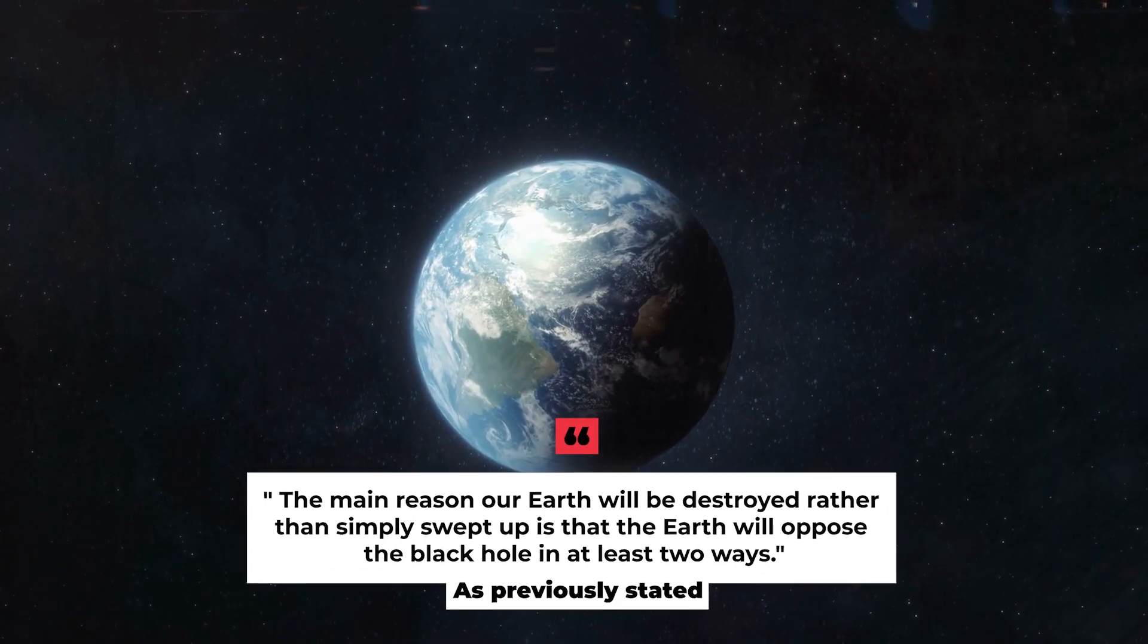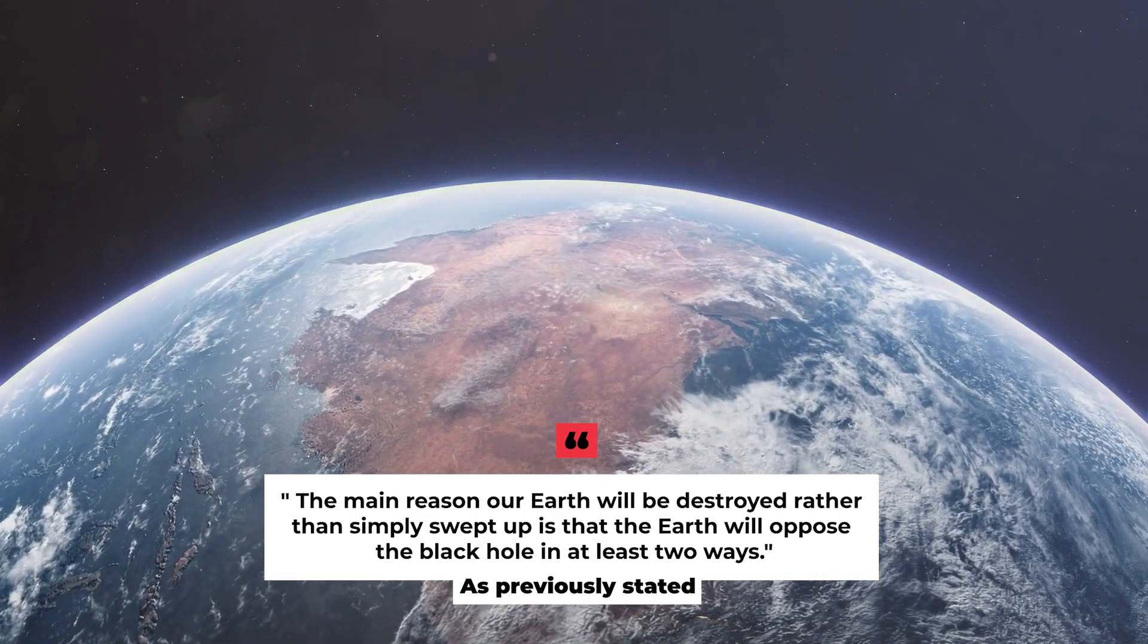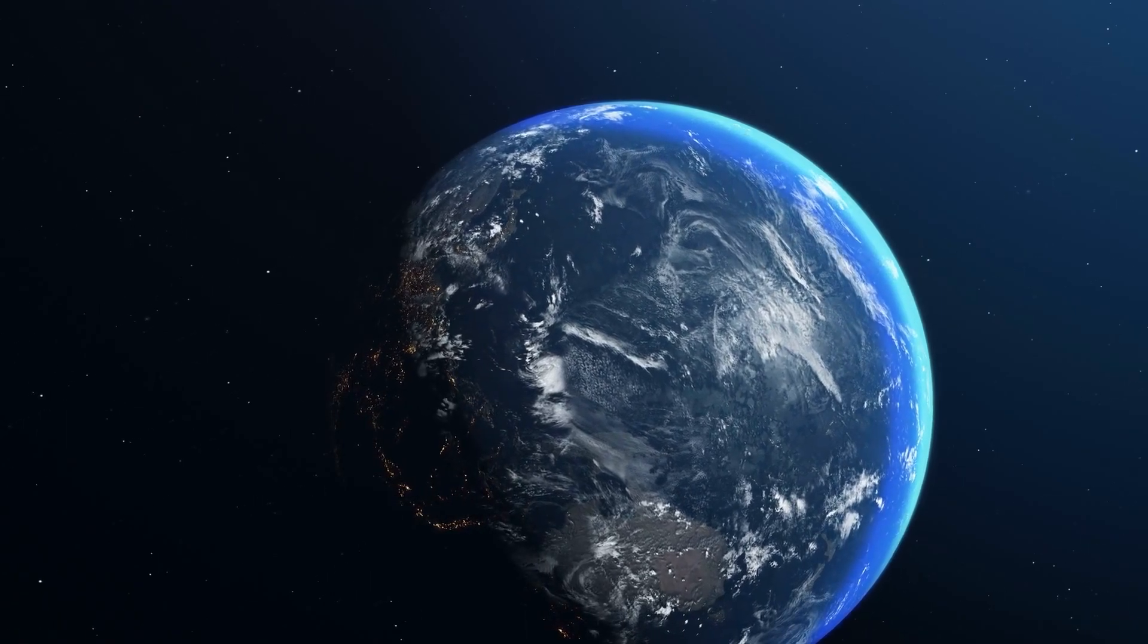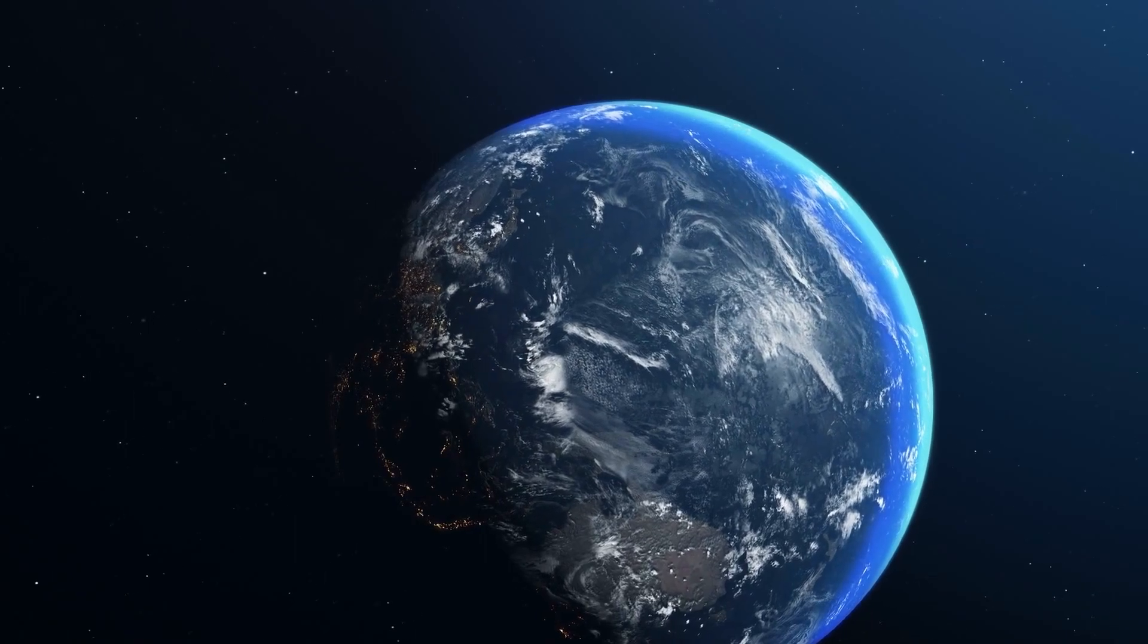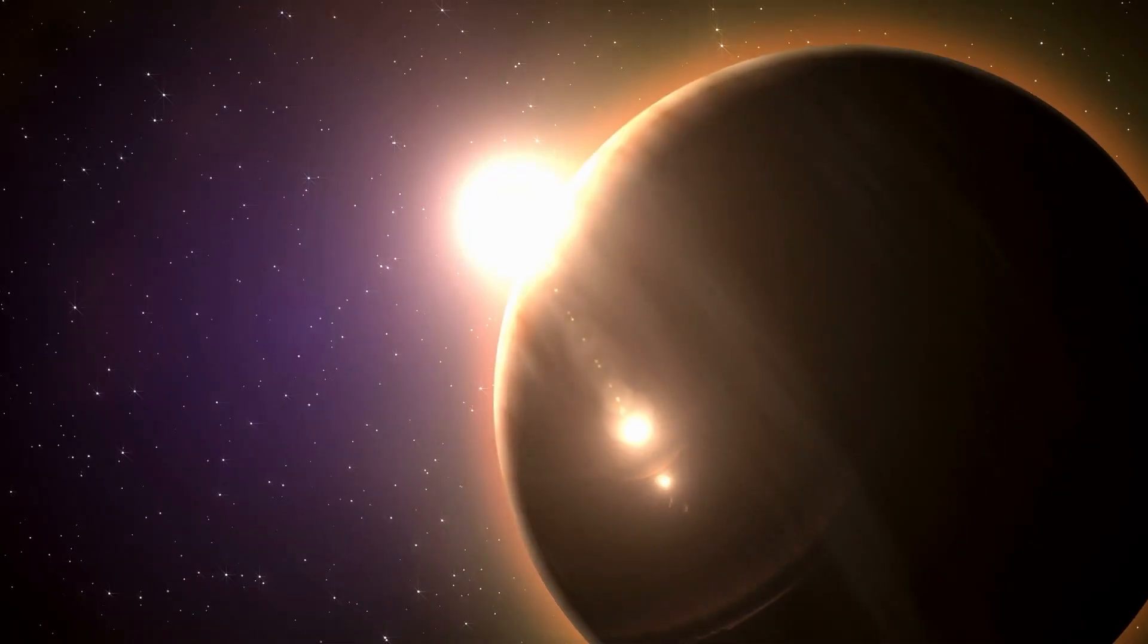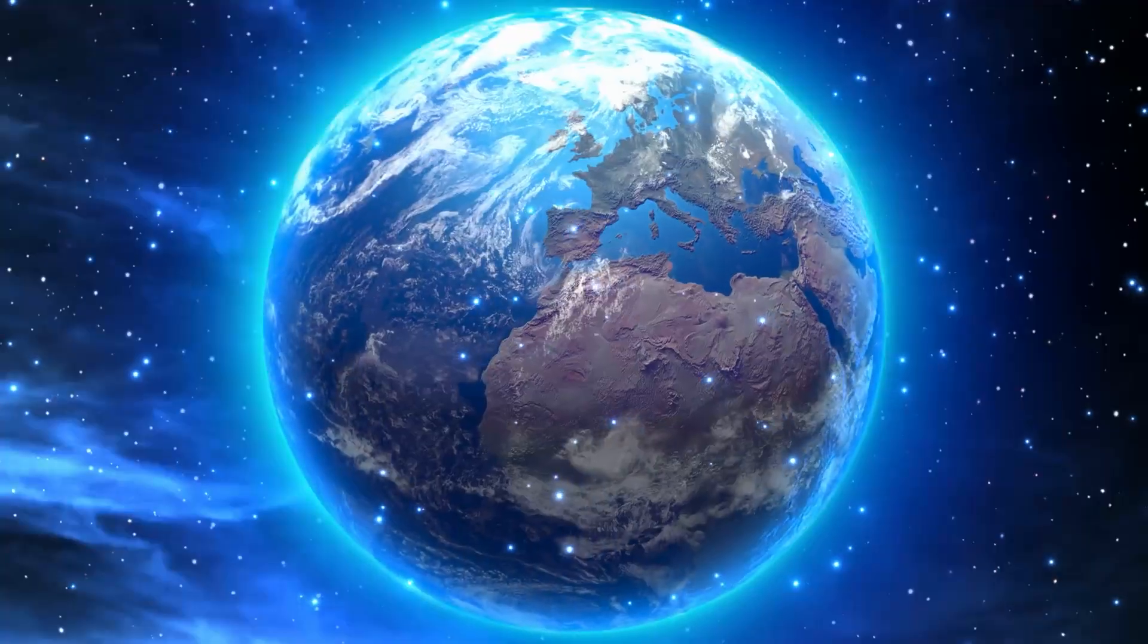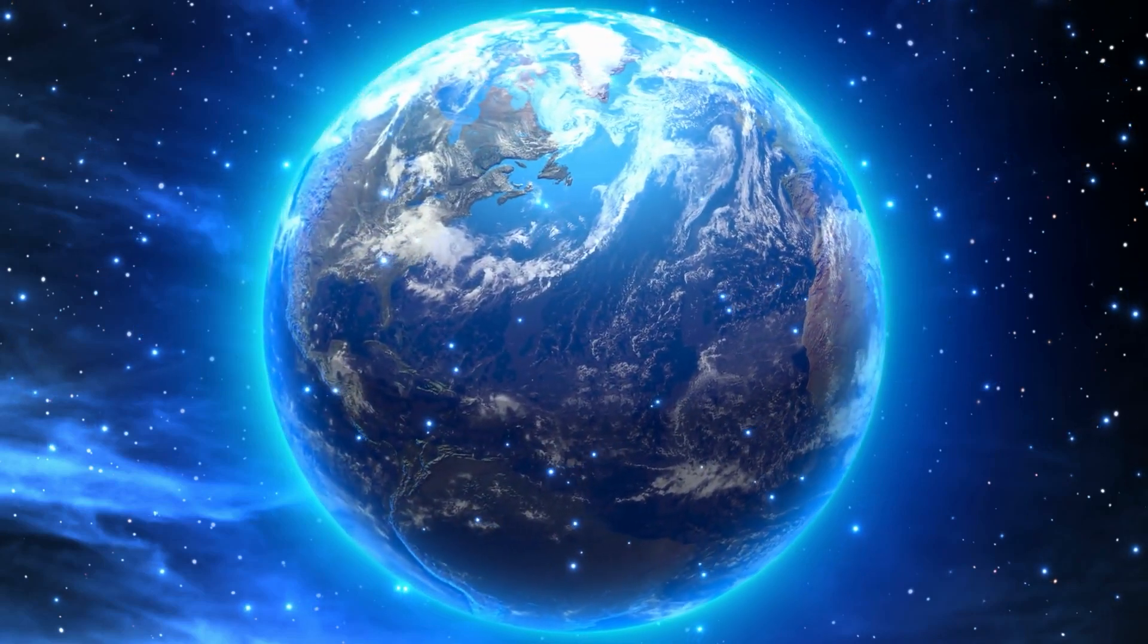The main reason our Earth will be destroyed, rather than simply swept up, is that the Earth will oppose the black hole in at least two ways. In other words, due to the external pressure and the fact that the planet is rotating, the Earth would not go without a fight. As it continues to orbit, a portion of the planet is devoured with each pass. The only reason the feast would be significantly slowed would be due to our planet's rotation, and whatever mass of Earth remained would eventually collapse into a disk of hot rock and begin circling around the black hole.